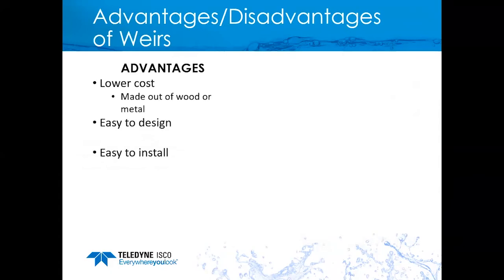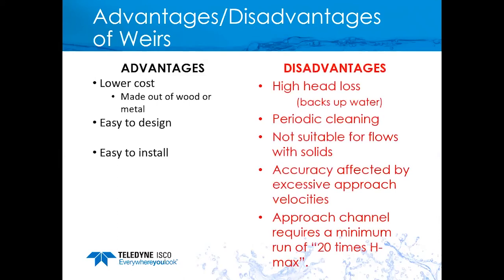Advantages of a weir: low cost — especially if made from wood or metal — and a simple design, easy to design and install. Disadvantages include higher head loss because we're putting a wall across the flow stream, which backs up flow. It can require periodic cleaning and is not suitable for flows with solids. Accuracy is affected by excess approach velocity — do not use where fast-moving velocity approaches the weir. The approach channel should be a minimum of 20 times the maximum head height, requiring a good straight run of channel before the weir.